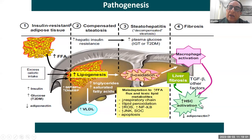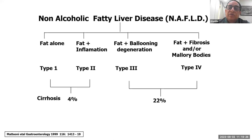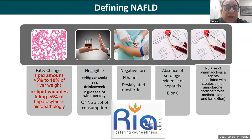We have different stages of NAFLD. Type 1 is fat alone; type 2 is fat plus early inflammation, with cirrhosis developing in about 4% of cases. The moment we have ballooning of hepatocytes — type 3 — and then Mallory body deposition and fibrosis — type 4 — a large percentage leads to cirrhosis. Histopathologically, fatty liver disease is defined as more than 5 to 10% lipid in liver weight, or lipid vacuoles filling more than 5% of hepatocytes.